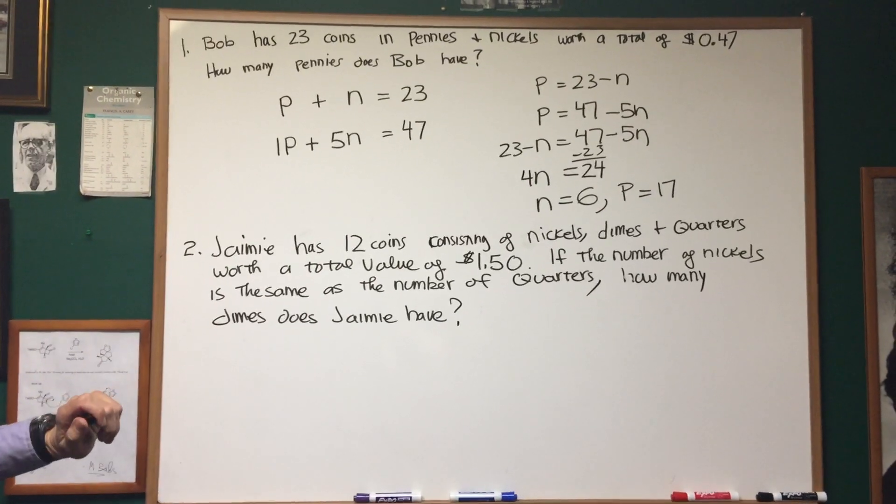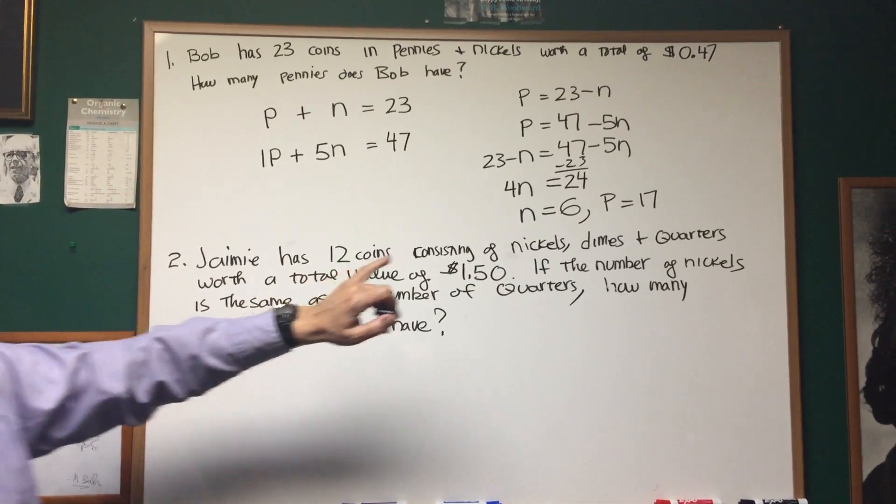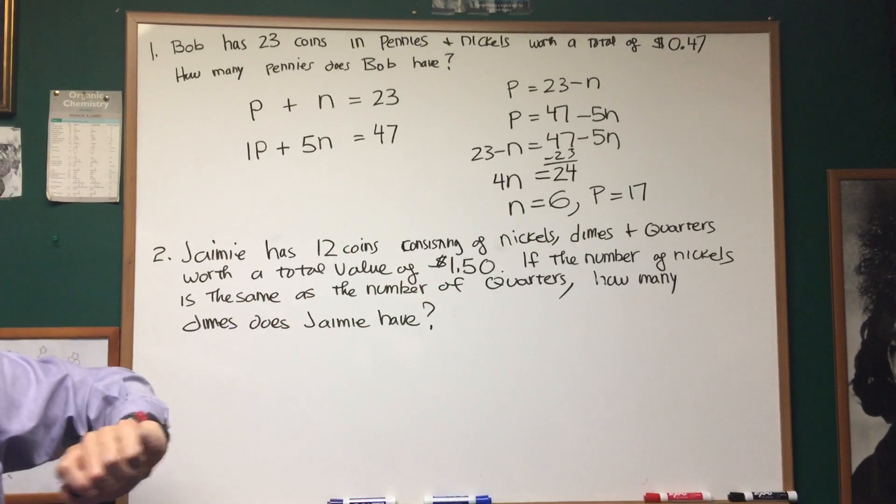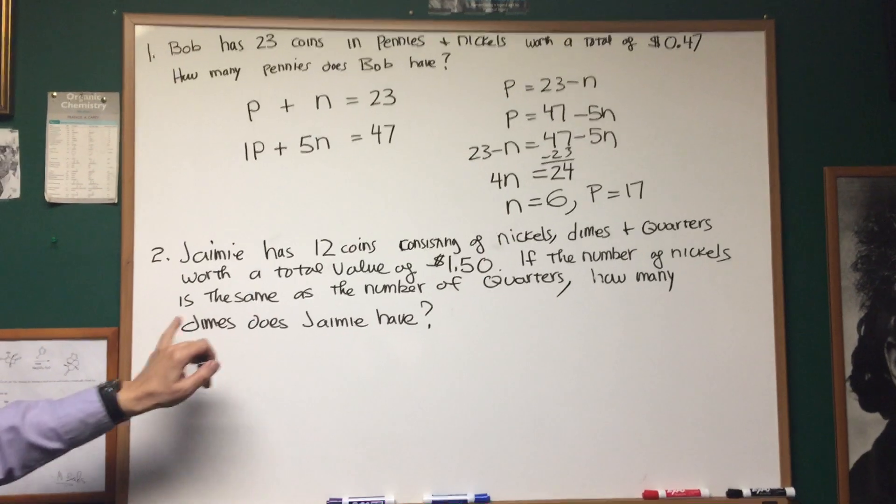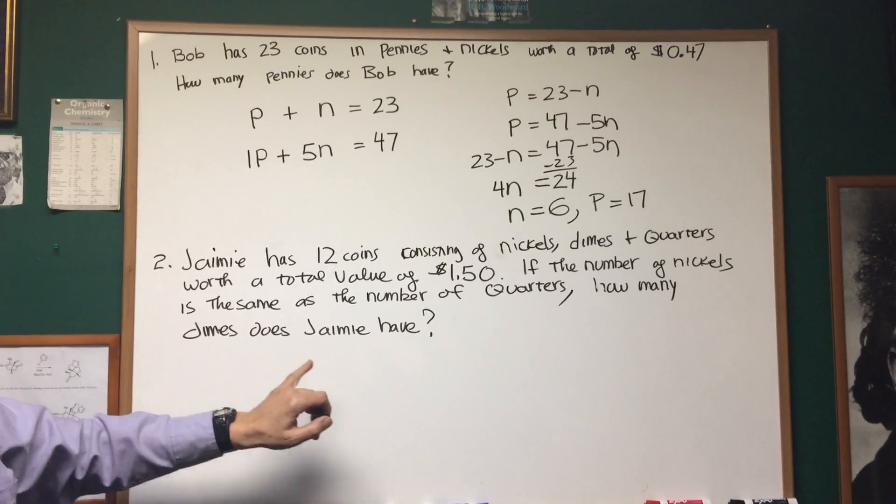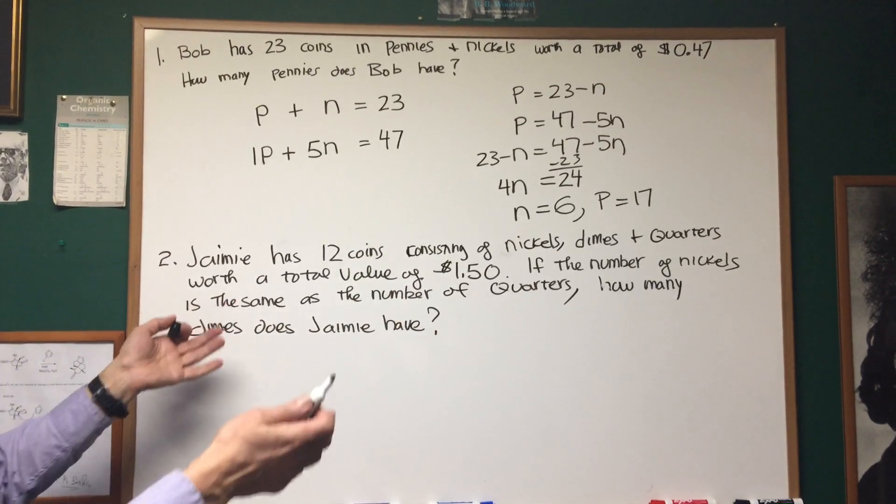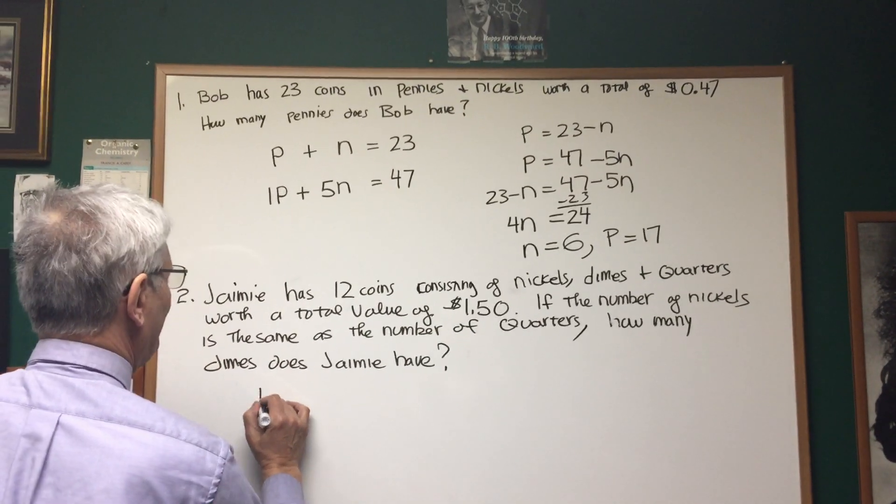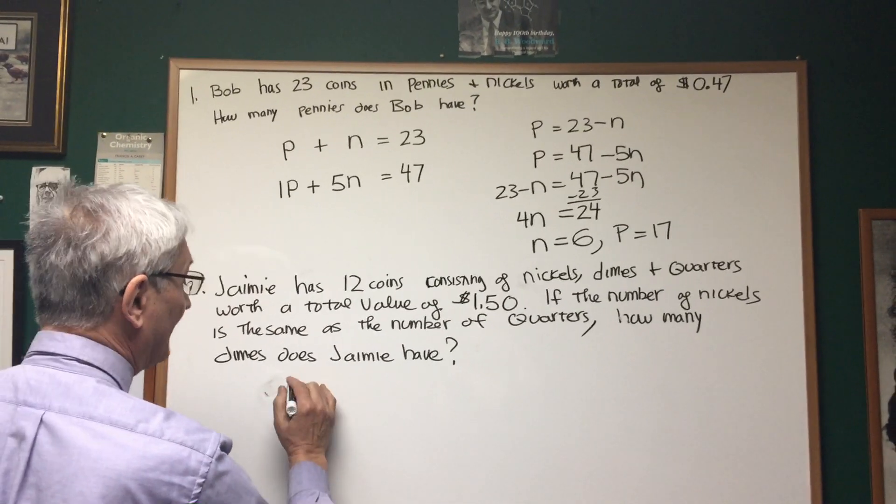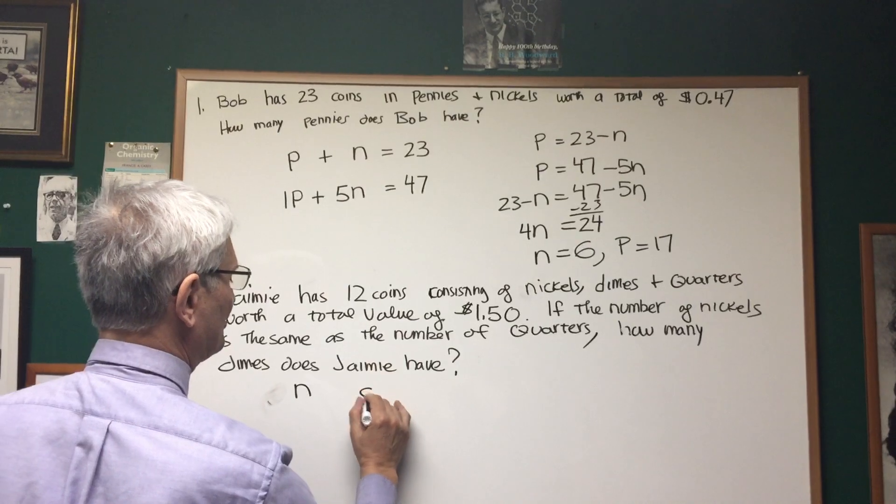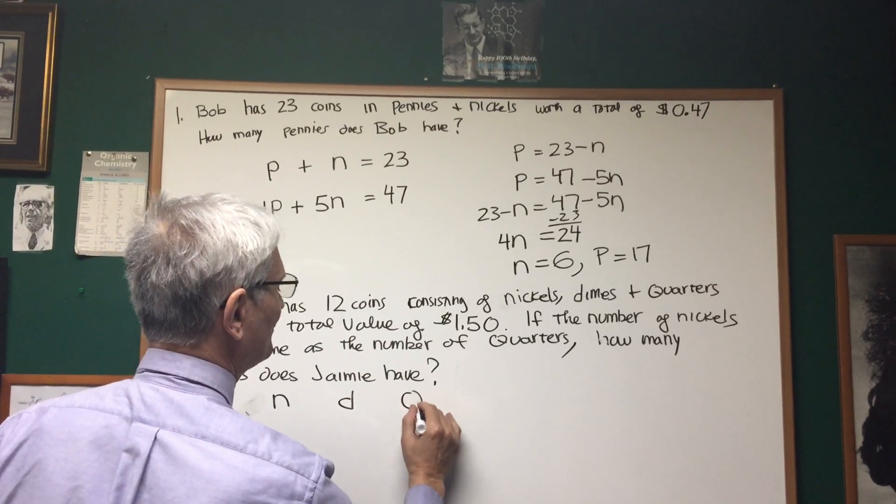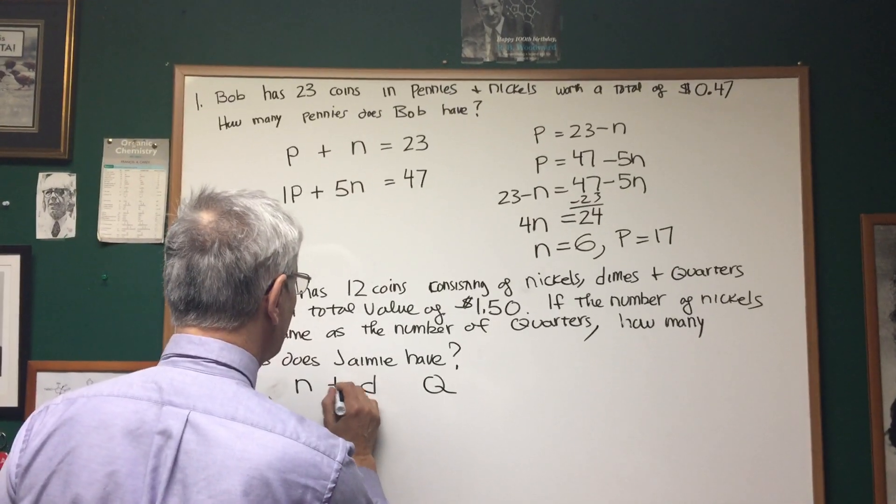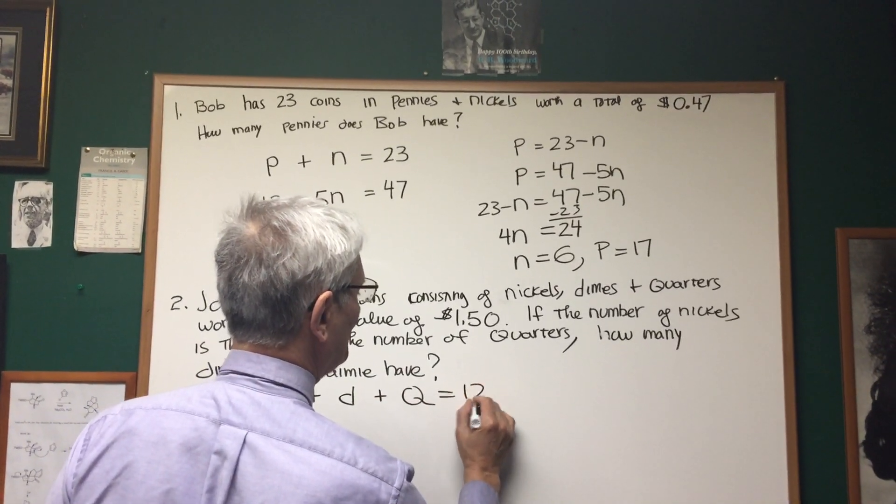Okay, let's read the problem first. Jamie has 12 coins consisting of nickels, dimes, and quarters, worth a total value of $1.50. If the number of nickels is the same as the number of quarters, how many dimes does Jamie have? Well, we're probably going to wind up solving for nickels, dimes, and quarters. So let's just assign a value for the number of nickels, which is going to be N. The number of dimes, which is D, and the number of quarters, which is Q. We know the total number of coins is 12, so I know that N plus D plus Q is equal to 12.